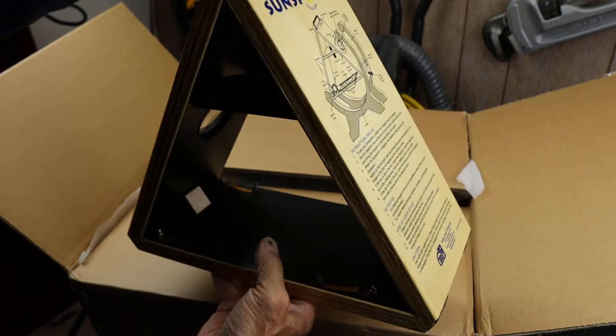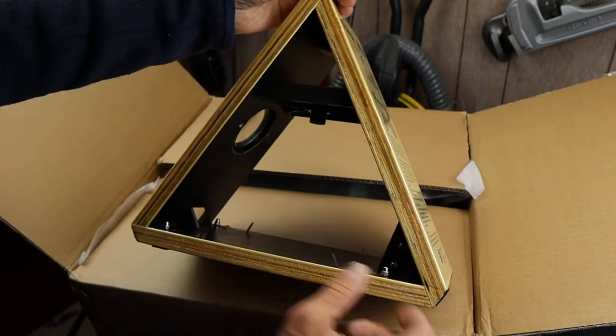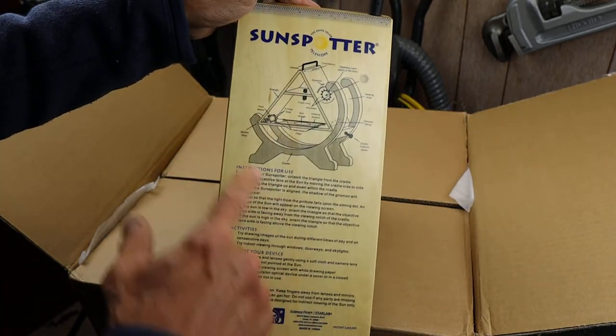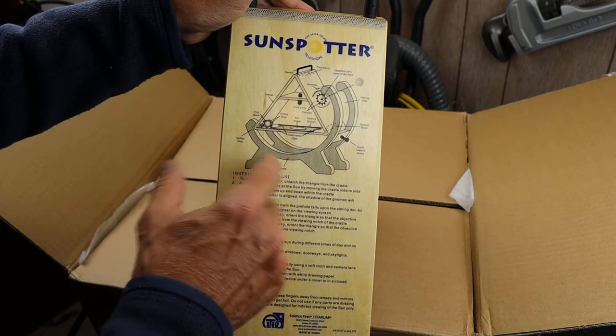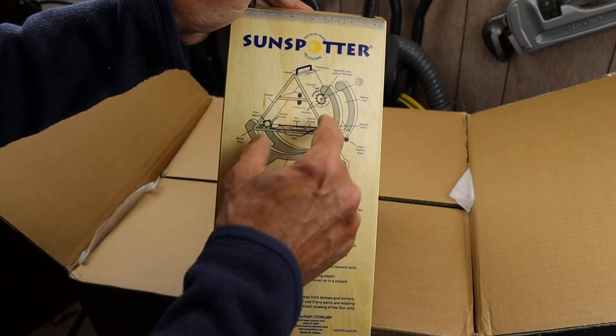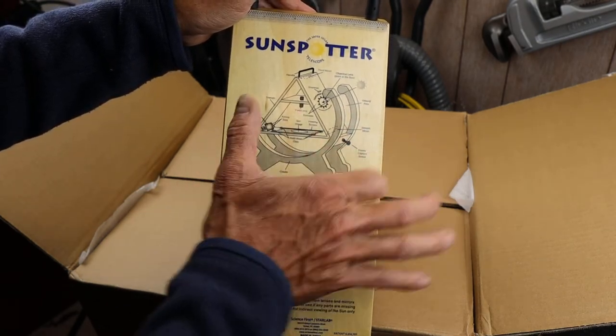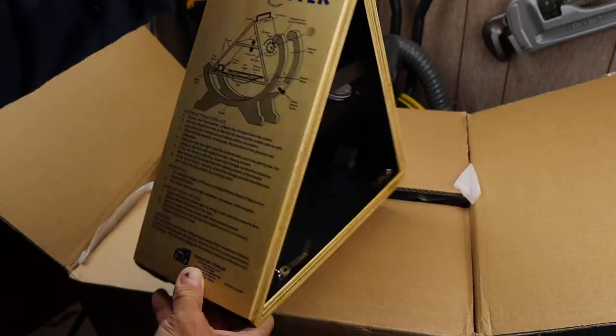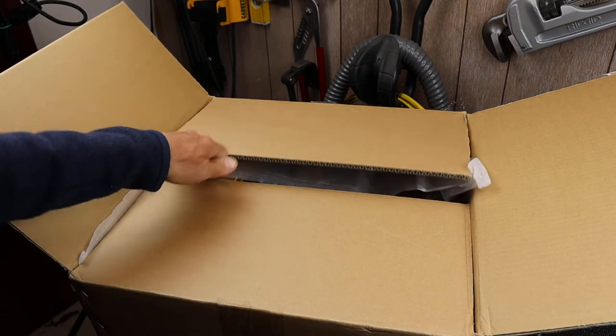So anyway this is kind of the magic of the operation of the scope. And then for alignment you can see here it's going to sit in this cradle. So you've got a triangle basically in a circle and it allows it to easily be adjusted in any direction. So let's get that part out.